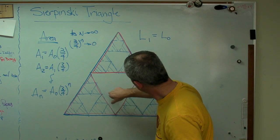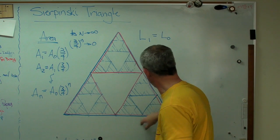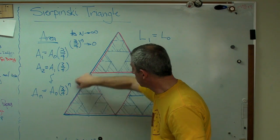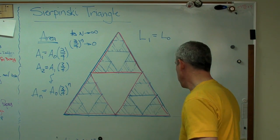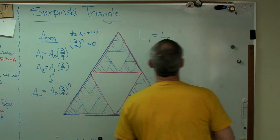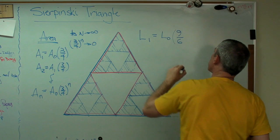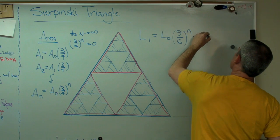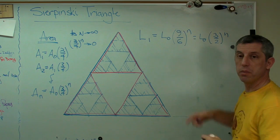L1, we had three extra sides. So, when we started out with 1, 2, 3, 4, 5, 6 sides, we wound up with 1, 2, 3, 4, 5, 6, 7, 8, 9 sides. So, just like that's A0 times 3 over 4 to the N, this is L0 times 9 over 6 to the N, which is really L0 times 3 over 2 to the N, if I divide both of those by 3.